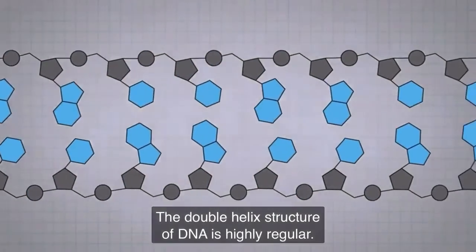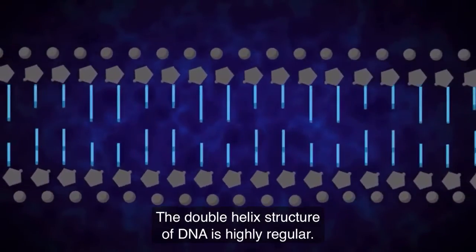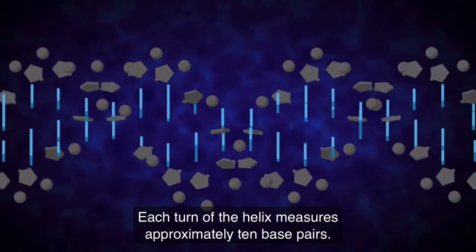The double helix structure of DNA is highly regular. Each turn of the helix measures approximately 10 base pairs.